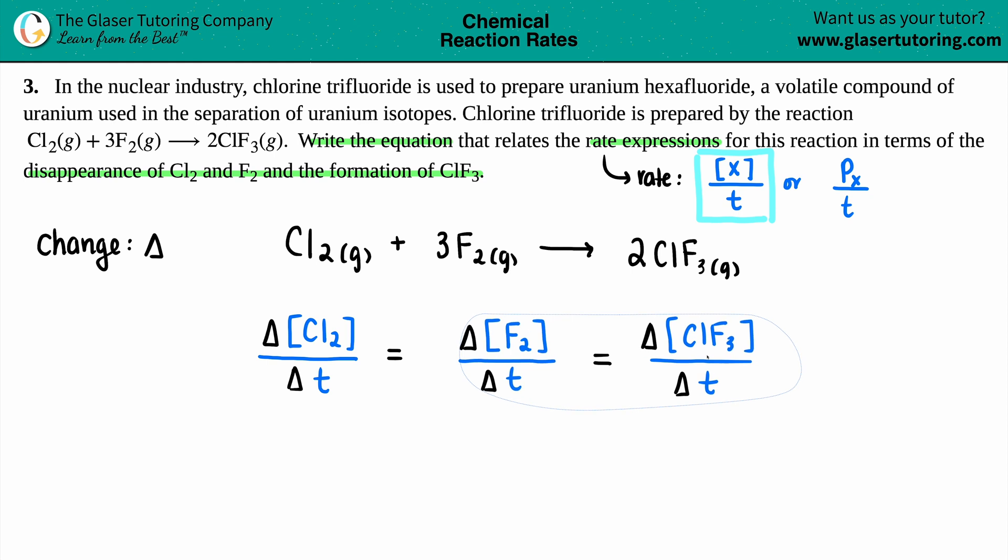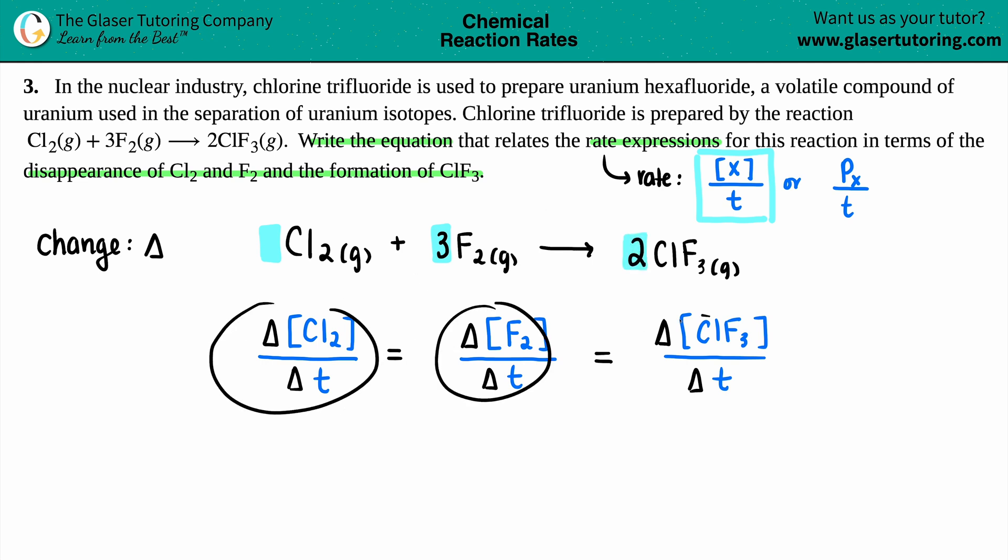But now we're still not there. There's a couple of things that we just have to keep paying attention to because by this, we're saying that this is a one-to-one-to-one relationship if everything is just equal right from the beginning. But that's not true because if I look at my coefficients, I got a three in here and I got a two.